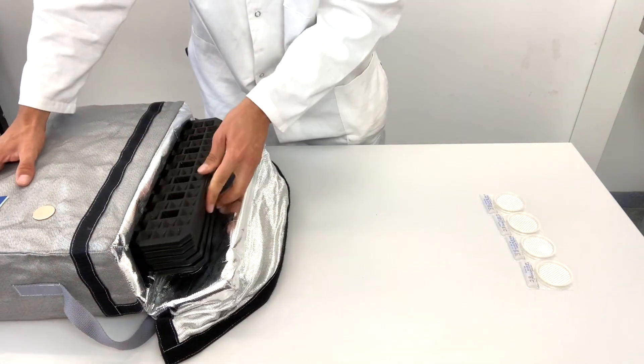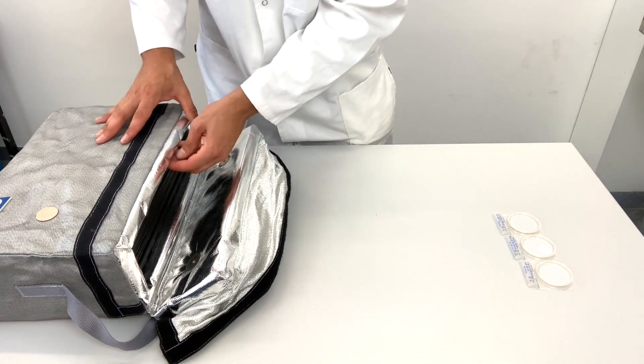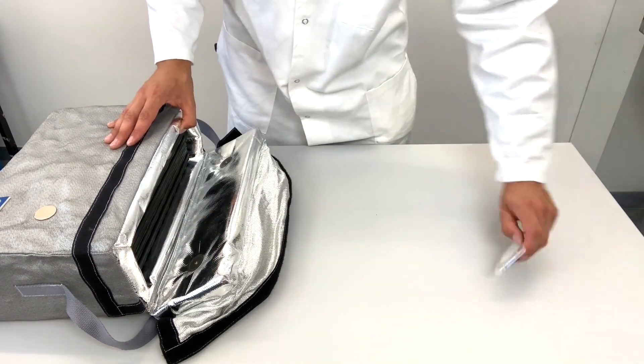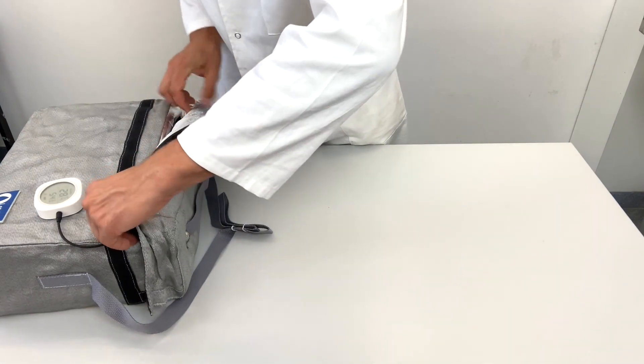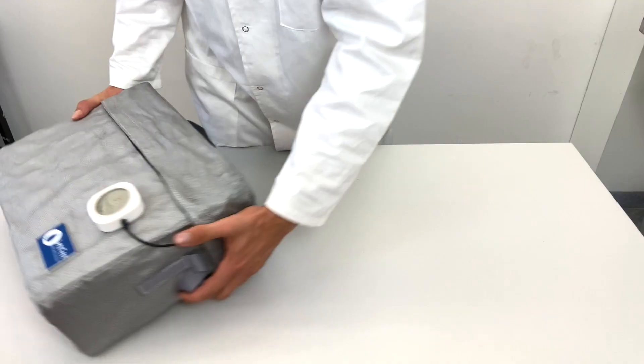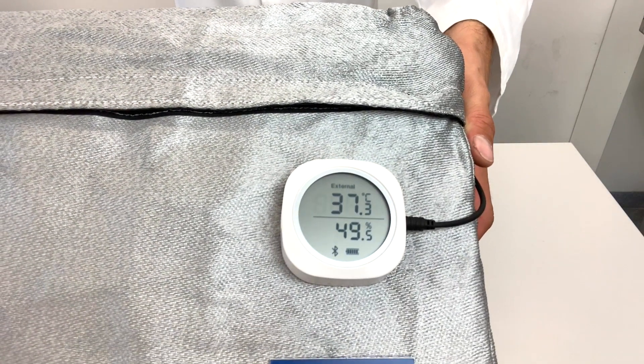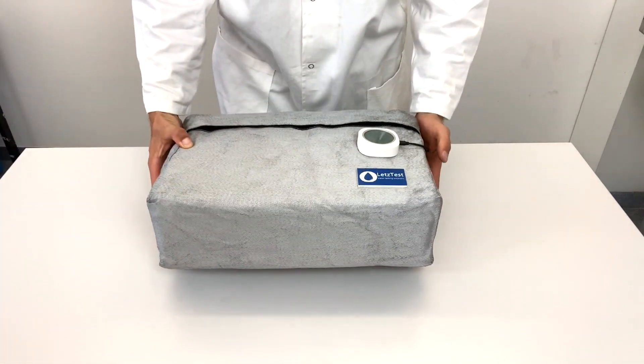Now place the plates flat side up in the incubator and slide the petri dishes topside down into the incubator at the very top. Then place the temperature sensor nearby, close, and keep the incubator in horizontal position. The incubator will keep the temperature stable at exactly 37 degrees for 24 hours without any electricity.